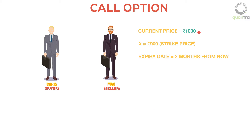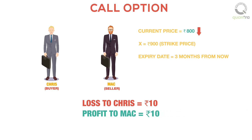Now assume that the price drops below Rs.900. Then Chris will not exercise the contract, since he has no obligation to do so, and loses the Rs.10 paid to Mac as the premium. Similarly, Mac profits Rs.10 received as the premium. Here Mac will not have to deliver anything, since Chris has not exercised the option.